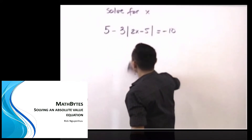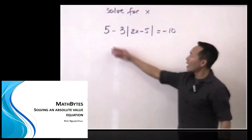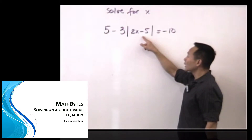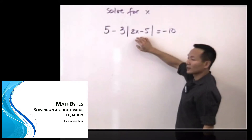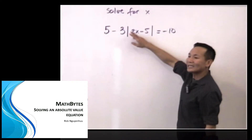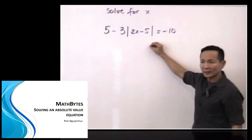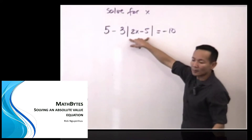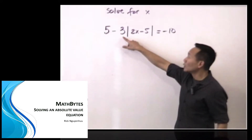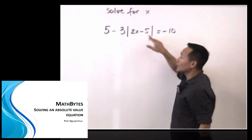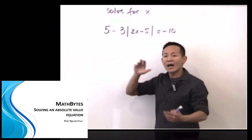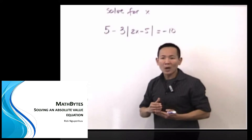Going back to this equation right here. We have 5 take away 3 times the absolute value quantity of 2x minus 5 equals negative 10. We want to solve for x. You see that x happens to be inside the absolute value quantity, and the absolute value quantity is like a block of ice — you can't distribute the negative 3 in. So the rule of thumb is to always isolate the absolute value quantity by itself.